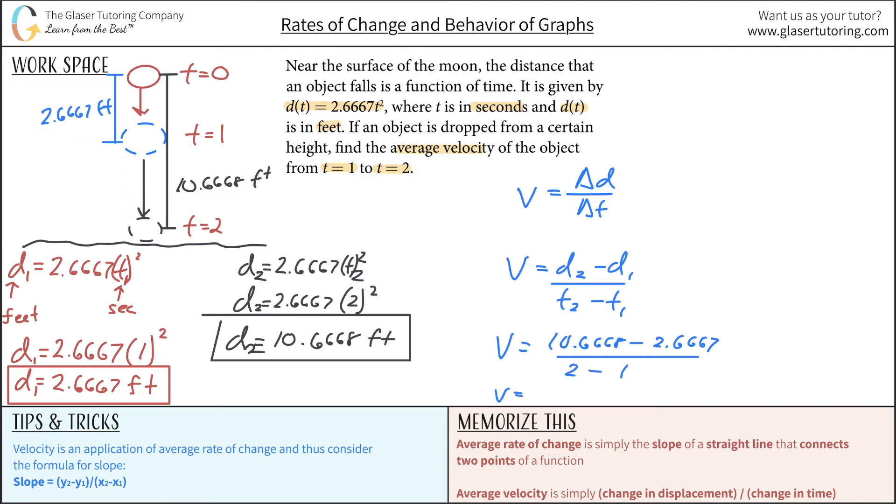And the average velocity here will be simply 10.6668 minus 2.6667. I'm going to round it here slightly. It should be equal to about 8 over 1, which is just 8. And this will now be in feet per second, because those were the units they told us.